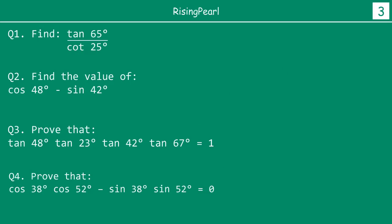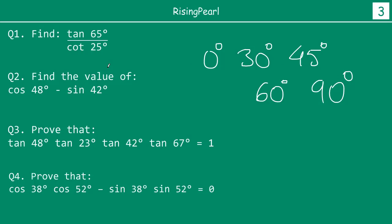In the last webisode our focus was mostly problems like: find tan 65° / cot 25°, or cos 48° − sin 42°, or prove that a given expression equals 1 or 0. The important point is that none of these angles — 65°, 25°, 48°, 42° — are standard angles like 0°, 30°, 45°, 60°, or 90°. Yet, using complementary angle ratios, we learned how to solve each of these kinds of questions.